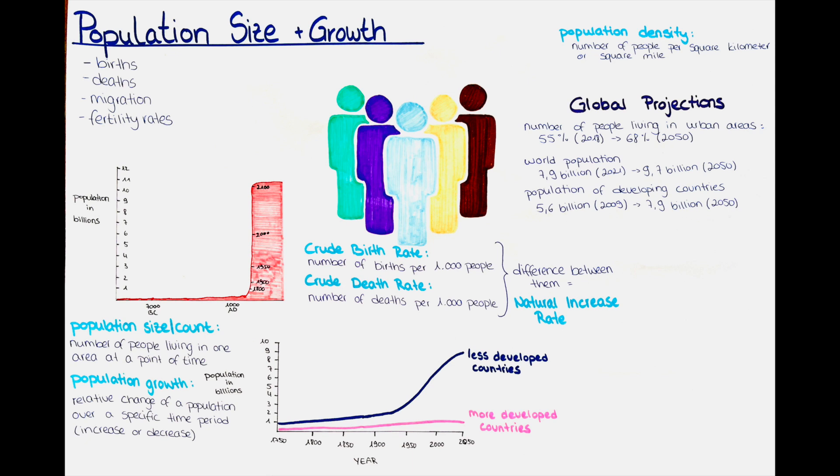Global trends in population density show that the world's population is becoming increasingly concentrated in urban areas. According to the United Nations, 55% of the world's population lived in urban areas in 2018, and this is projected to increase to 68% by 2050.